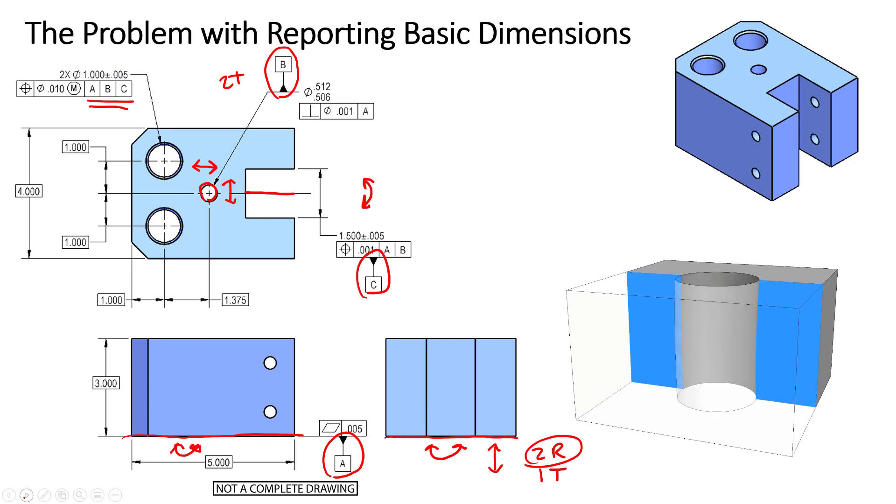So for this example, let's take into consideration this hole right here. If you're going to report the basic dimensions of this hole for location, which dimensions would you use to locate it? Would you use this one-inch dimension here with this 1.375-inch dimension here, or would you use this one-inch dimension alongside this one-inch dimension?